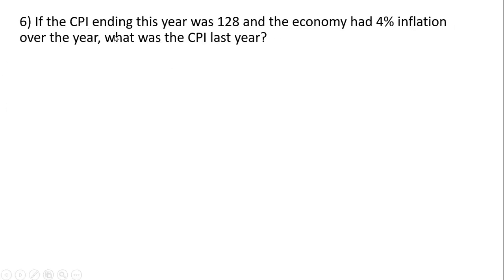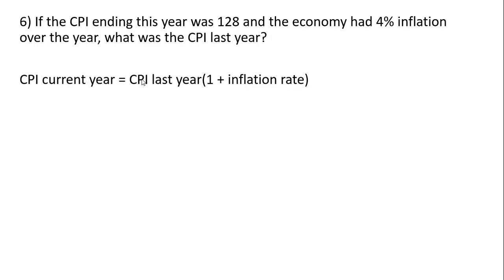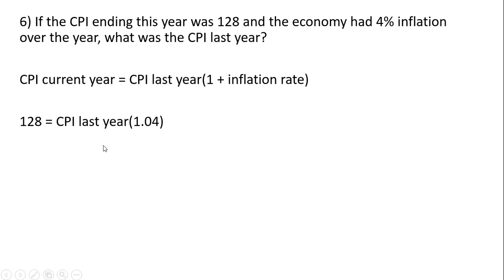Question six. If the CPI ending this year was 128, and the economy had 4% inflation over the year, what was the CPI last year? Similar to question five: the CPI in the current year equals the CPI last year multiplied by 1 plus the inflation rate. We know the CPI this year is 128, and 1 plus 0.04 is 1.04. Dividing everything through by 1.04, we solve for the CPI last year at 123.1.